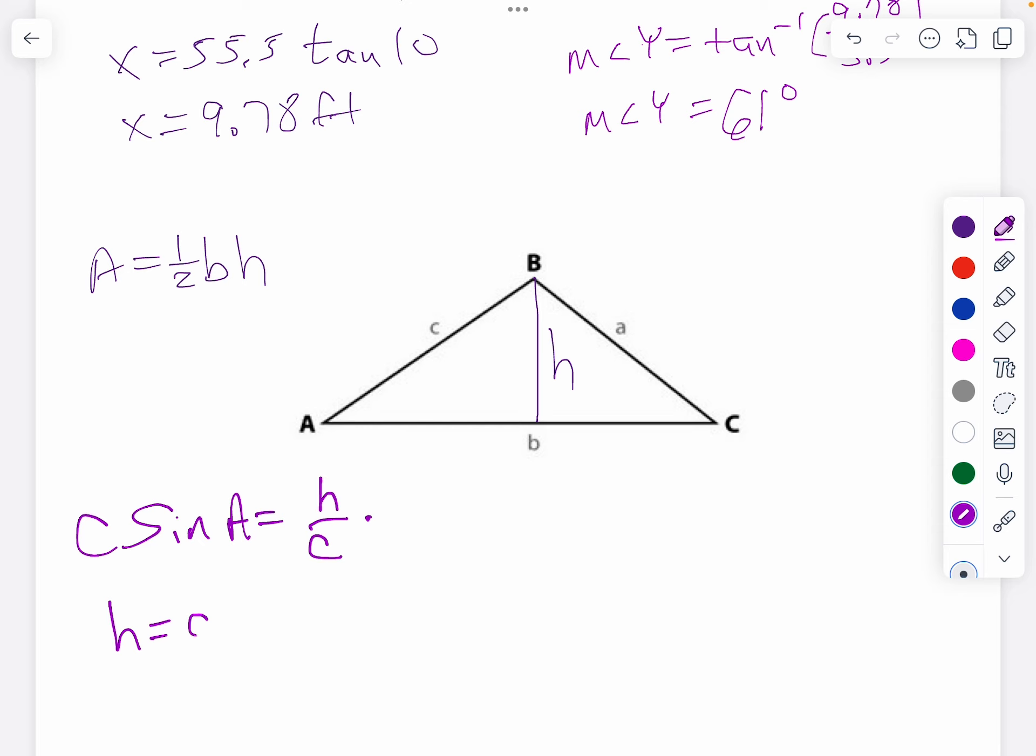So when I do my area, instead of writing h, I'm going to say c sine A. So it's one-half times b times c sine A. I could have used angle C and then it'd be one-half a b sine C, or angle B and it'd be one-half a c sine B. But this is the formula for the area of any triangle, whether it's right or not.